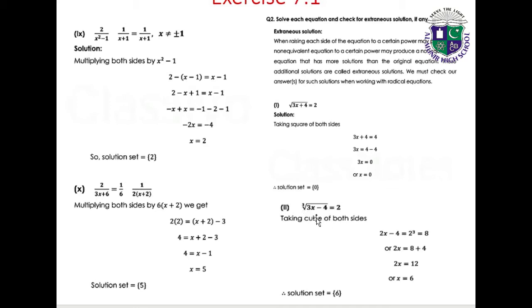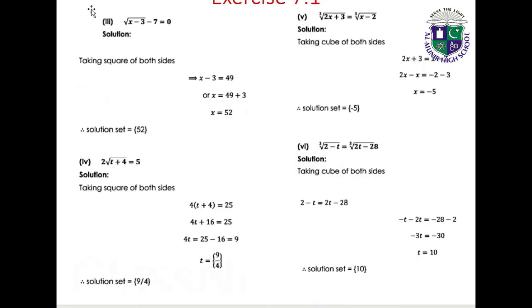Part 2: ∛(2x minus 4) equals 2. Taking the cube of both sides: 2x minus 4 equals 8, so 2x equals 12, giving x equals 6. Solution set: {6}.